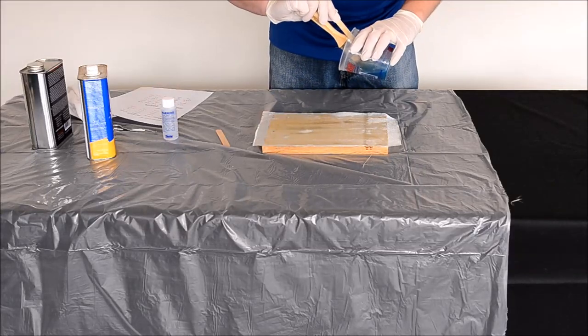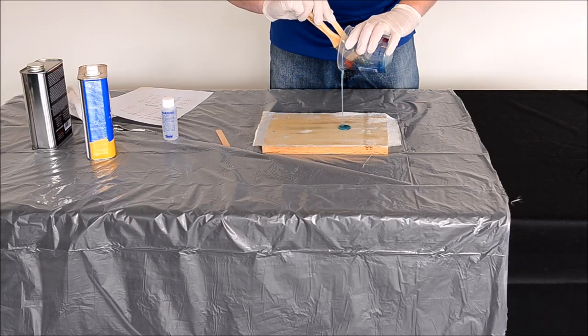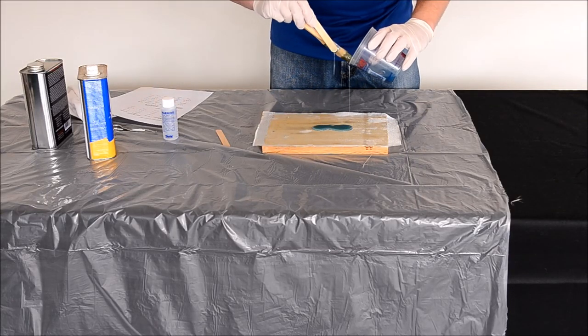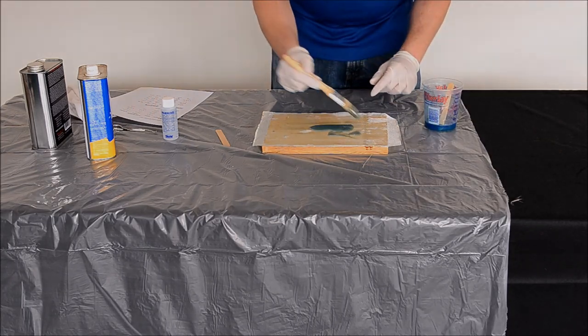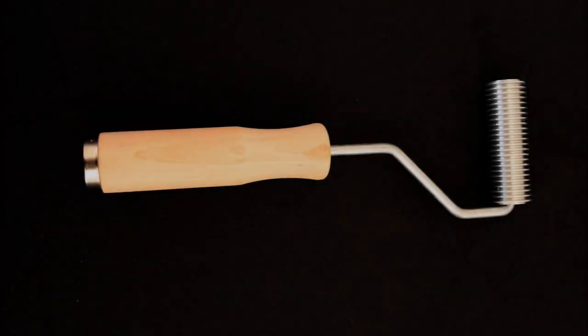The cloth will not completely wet out, so add a little more resin. Again, use your disposable brush or spreader to spread the resin. You can also use an aluminum roller to help completely wet out the cloth and remove any trapped air bubbles.